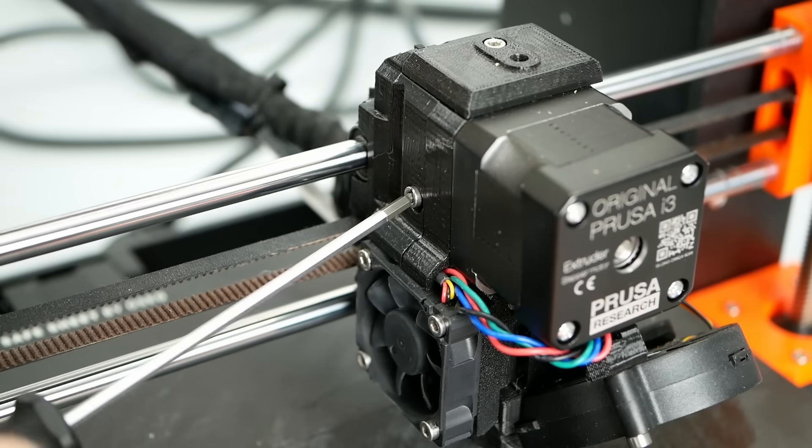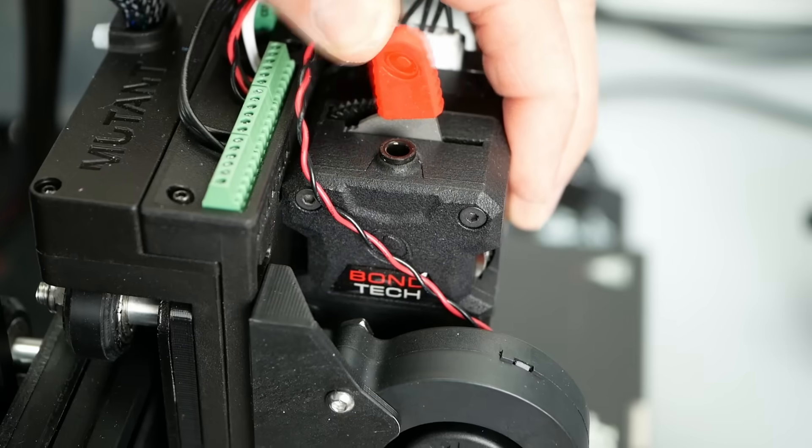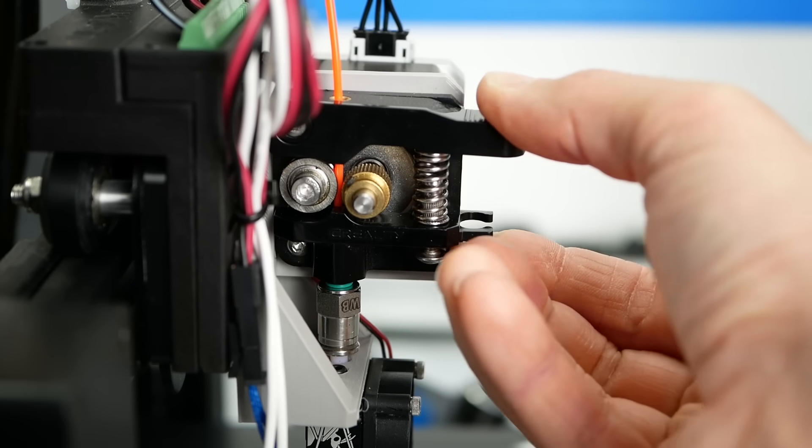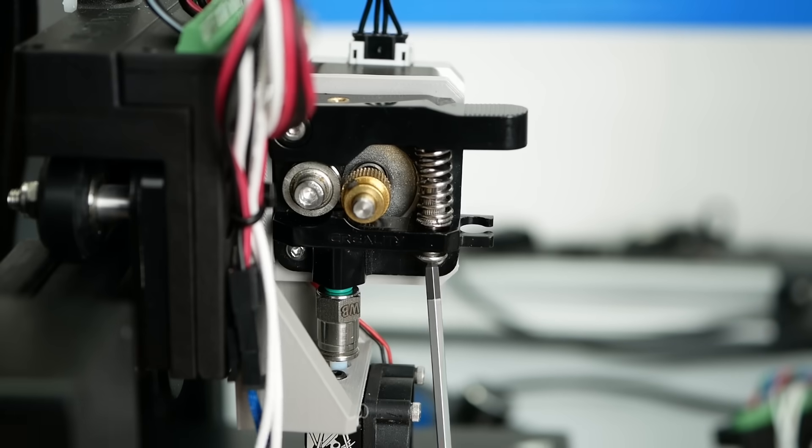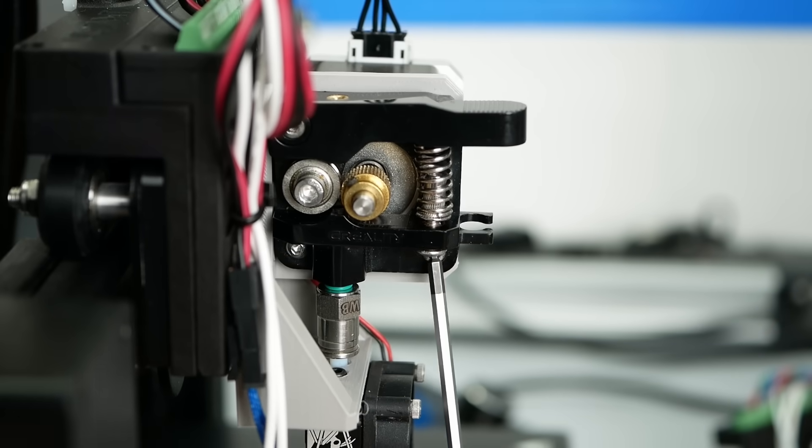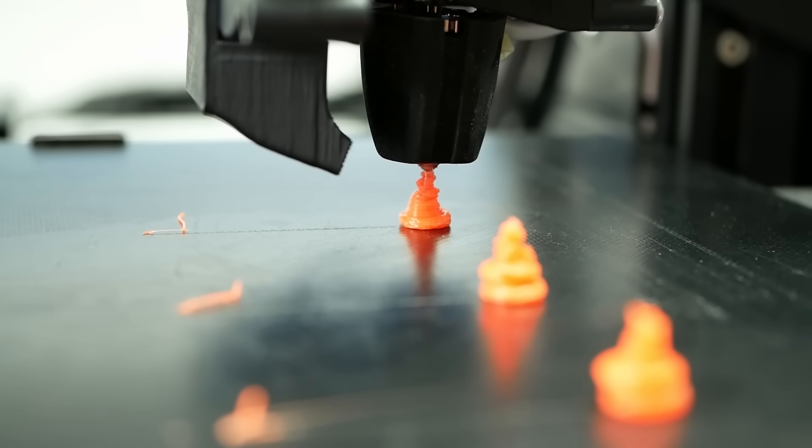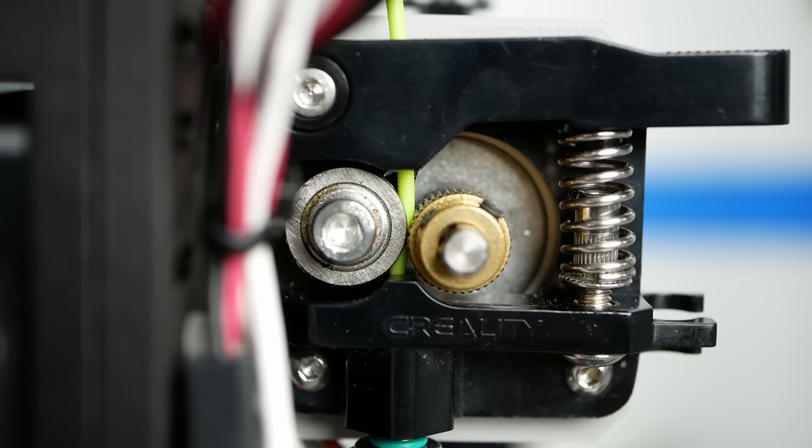Virtually all 3D printers have adjustment screws, knobs, or levers to change the pre-tension on the filament in the extruder. So how do you properly set it for your application? How can you get the most out of your extrusion system? And why do you really lower the tension for flexibles? Let's find out more!